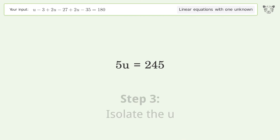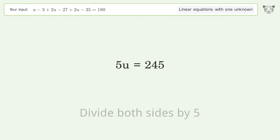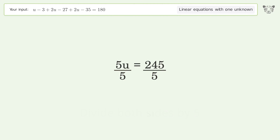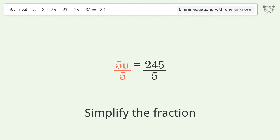Isolate u by dividing both sides by 5, then simplify the fraction.